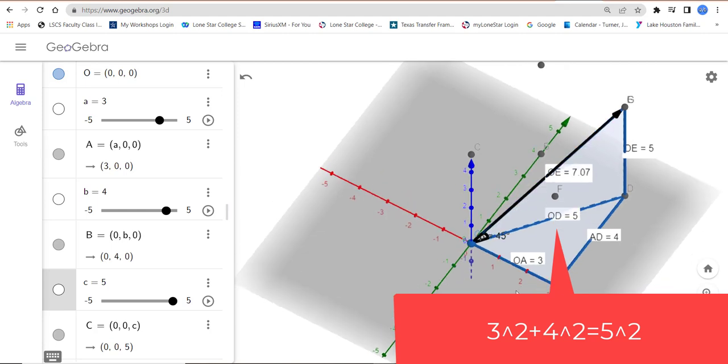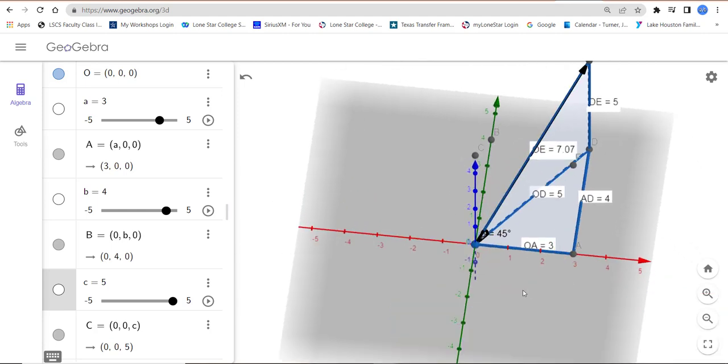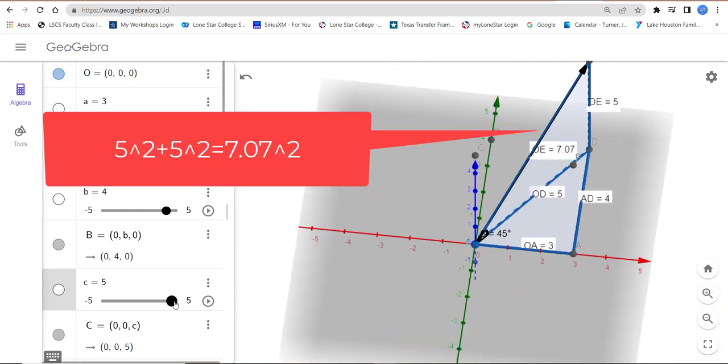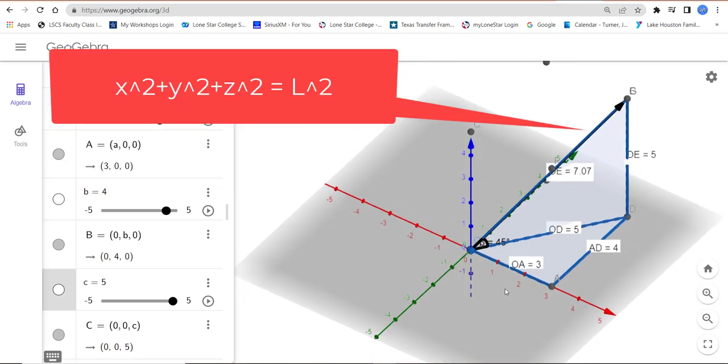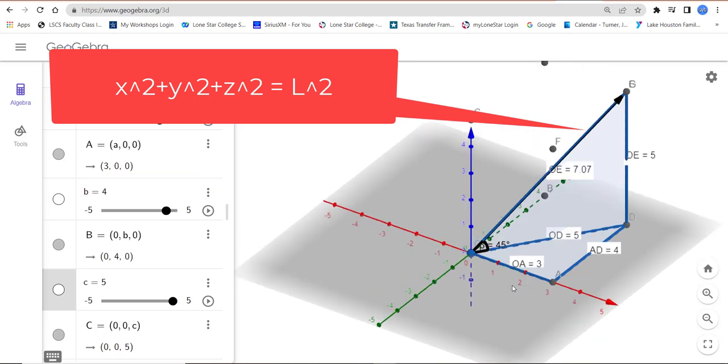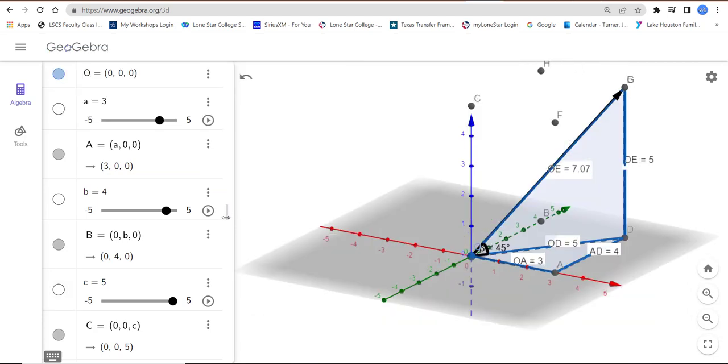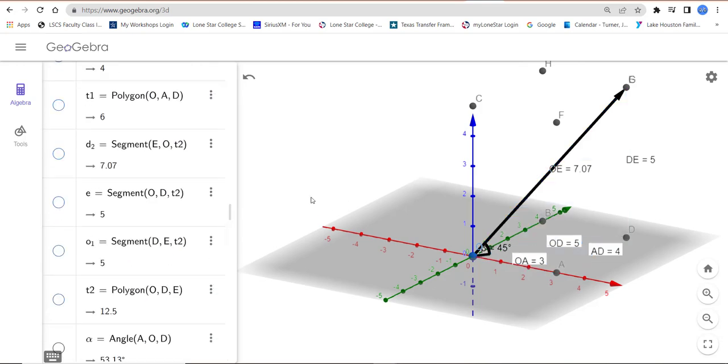So you can see 3, 4, 5 triangle on the ground and a 5, 5, 7.07 triangle standing straight up. And you can see that the overall length of this thing is going to be x squared plus y squared plus z squared.